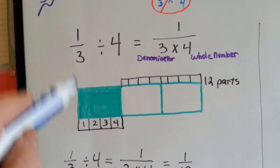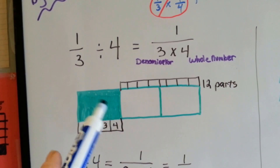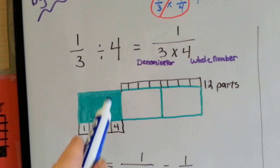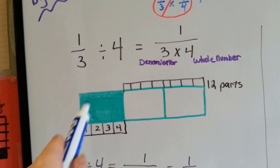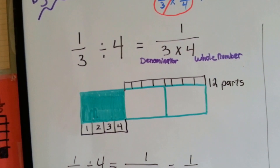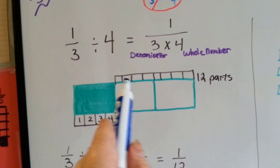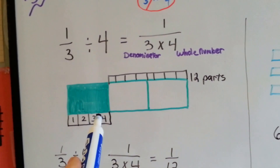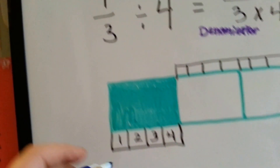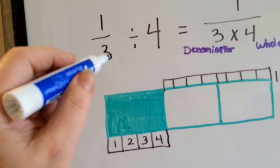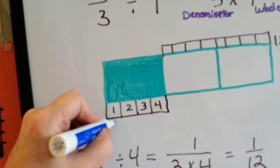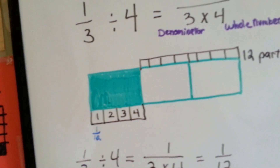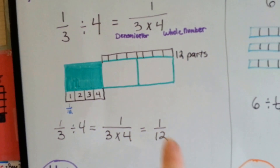Here's what it means: if you had 1 third and you divided it into 4 parts, here we have a green bar that is split into thirds. Here's 1 third of the green bar. Then we split that 1 third into 4 parts. If we split the other ones into 4 parts, there would be 12 parts. That means that 1 third divided by 4 would be broken up into little 1 twelfth parts.